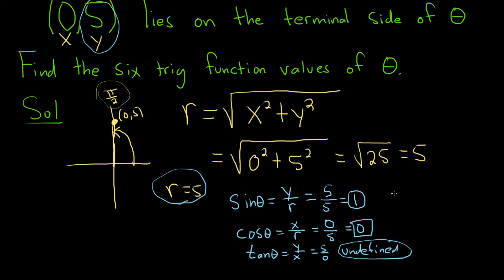Let's find the reciprocal functions. So the reciprocal of sine is cosecant of theta. So we basically take 1 and we flip it, so it's just 1, because 1 is really 1 over 1, and when you flip it, you just get 1 over 1, so that's just 1.